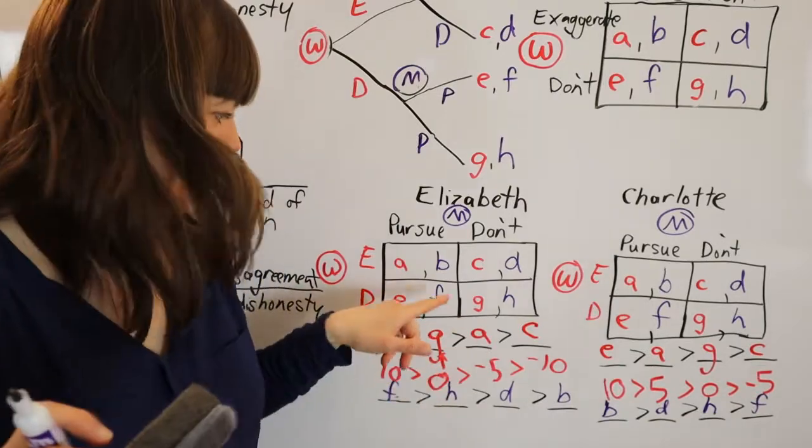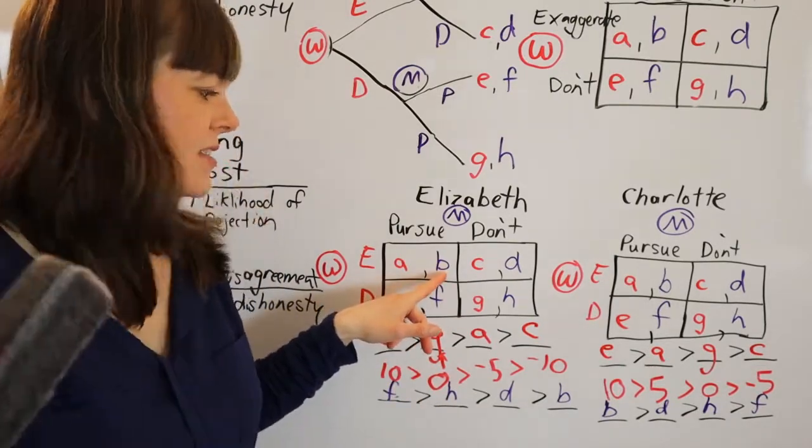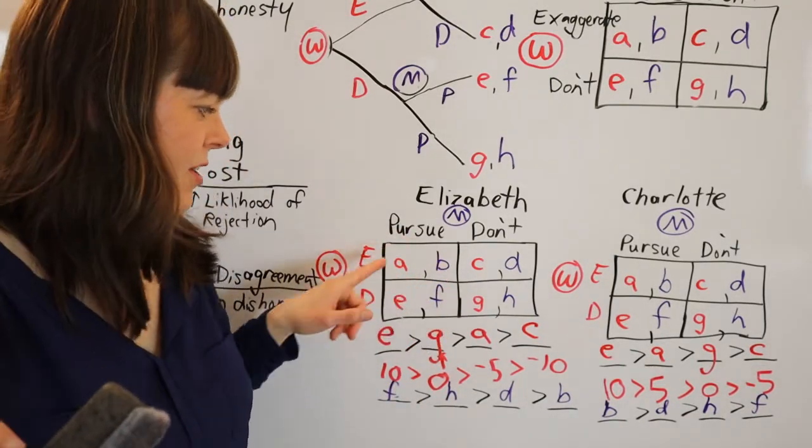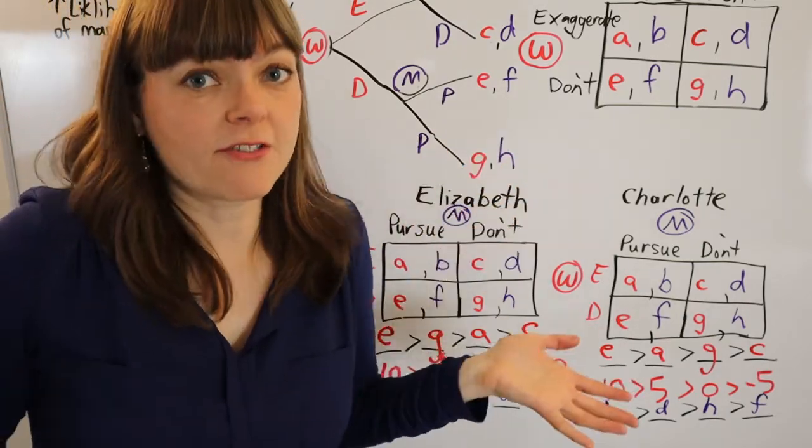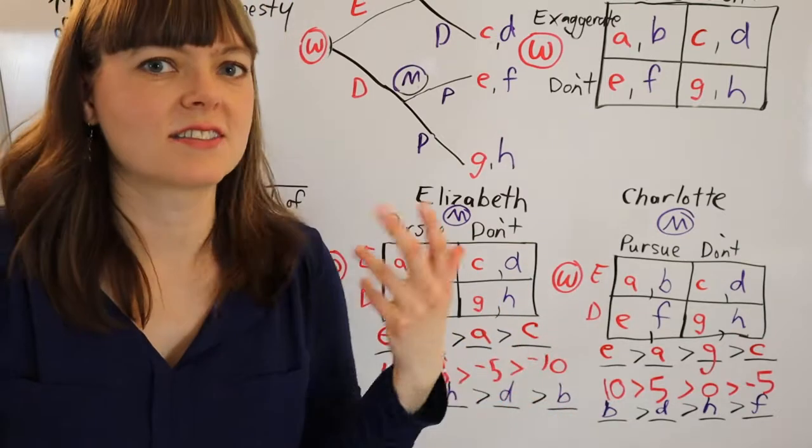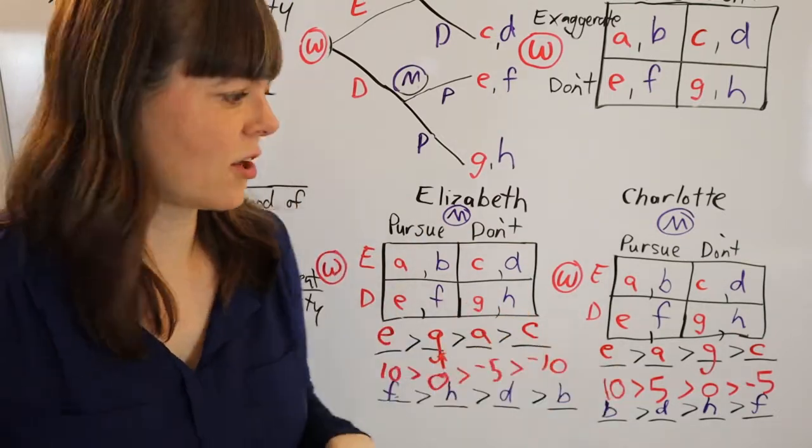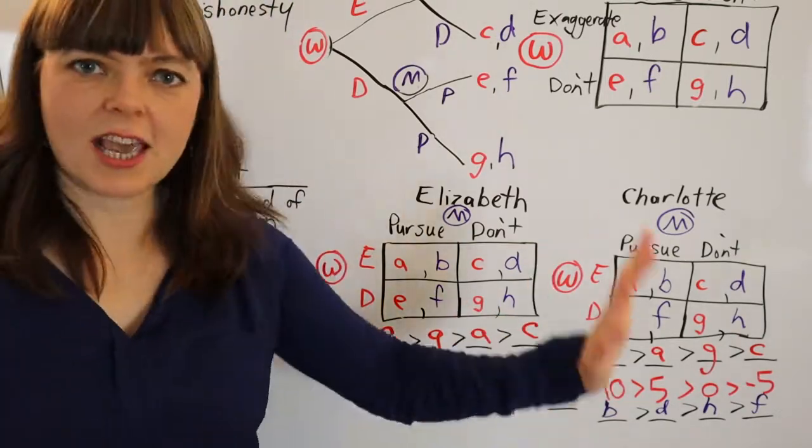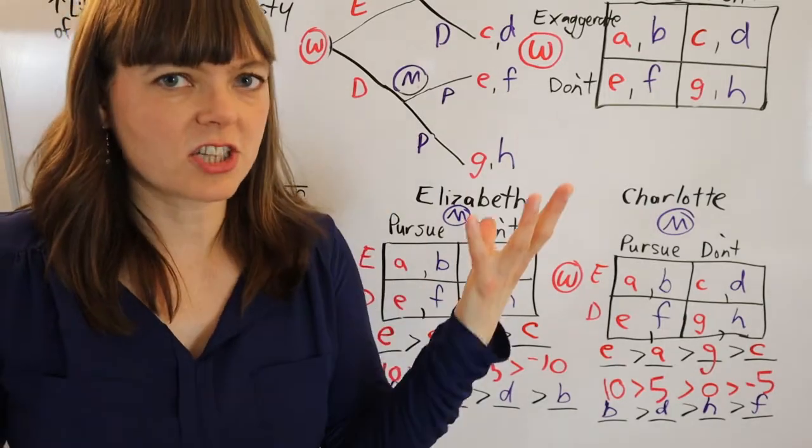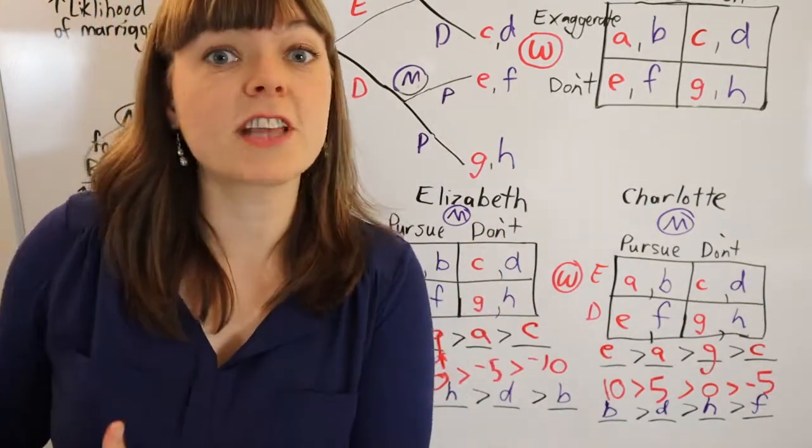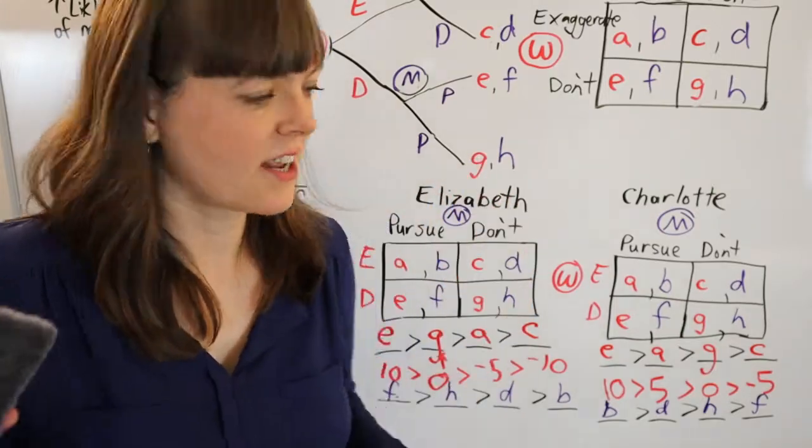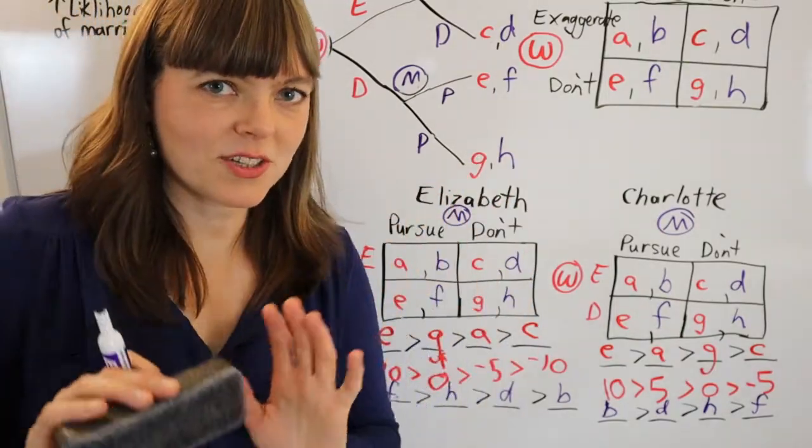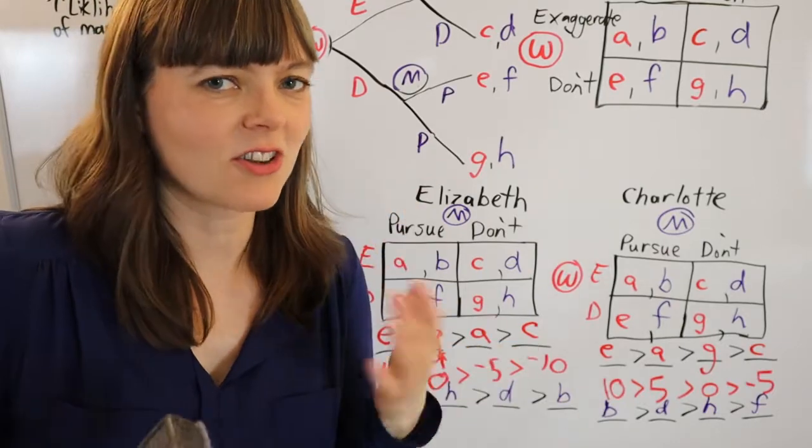In fact, I put B as the worst possible box to end up in for the man, because if she's exaggerating and he's pursuing, he's going to discover after the marriage that she doesn't like him as much as he thought she did. So that's not great. So I just came up with these numbers based on the logic. And of course, I might have filled out the cost benefit tables in much greater detail to get these. I'm not going to do that here. You can do that exercise on your own.